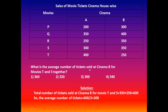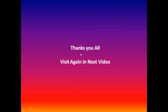Next question: What is the average number of tickets sold at cinema B for movie S and T together? Movie S contains 350 at cinema B and movie T contains 250 at cinema B. Total tickets = 350 + 250 = 600. Average = 600 / 2 = 300. Thanks to all, visit again for the next video.